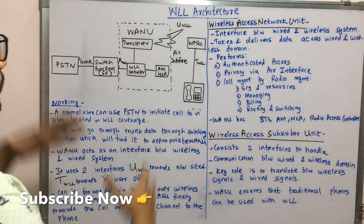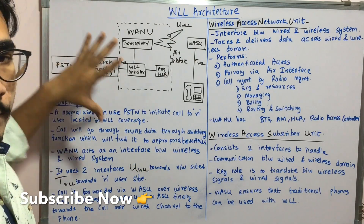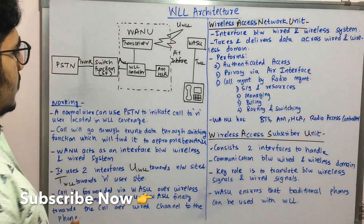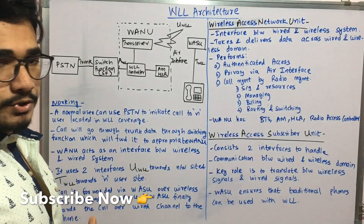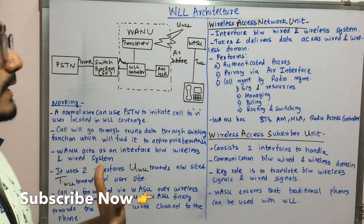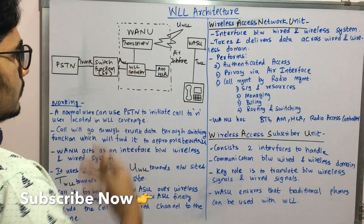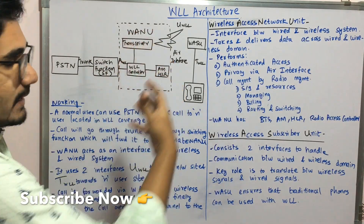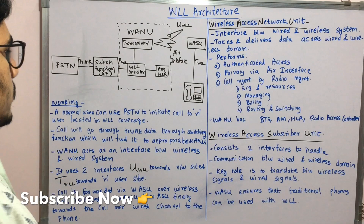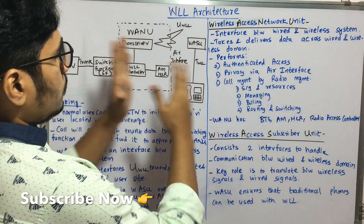To begin with, we start with the diagram. This is a diagram of how WLL looks like. It has a few components. It has the Public Switch Telephone Network (PSTN) and it's connected to the Switch Function (SF) via a trunk. Then we have a unit called the Wireless Access Network Unit (VANU), which has components including a transceiver, WLL controller, Access Manager (AM), and Home Location Register (HLR), all of which are wired connected.